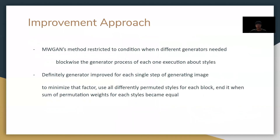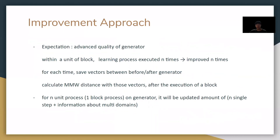However, approaching it this way is not exactly properly approximating the MMW distance, since a former learned style can affect more than the latter one, or vice versa. To minimize this concern, we will repeat the block process in each different permutation of styles until we do that for all possible permutations. We expect the generator to have performance in each synthesizing as good as the original StarGAN V2, and also improved in the aspect of both inner-domain and inter-domain factors.